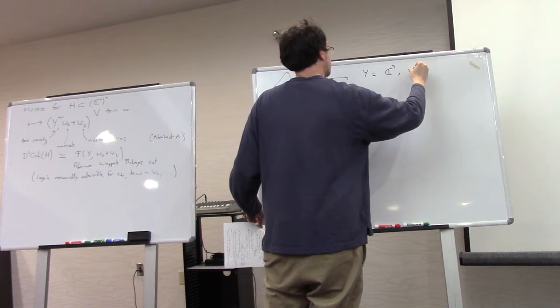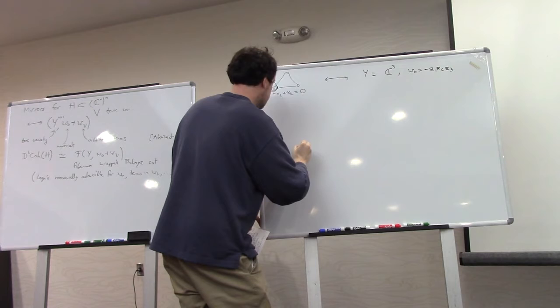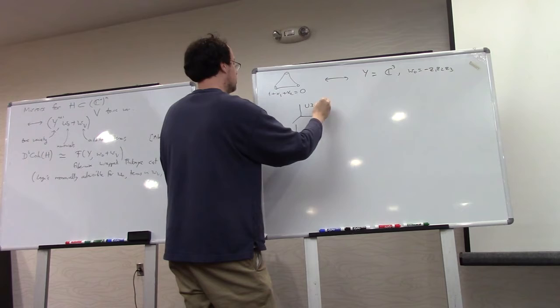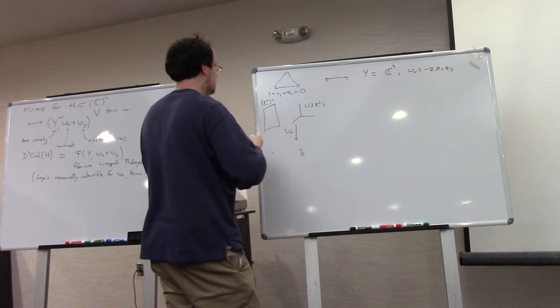viewed as the hypersurface 1 plus x1 plus x2 equals 0 in C star squared. The mirror in that case is C cubed with minus z1, z2, z3. And I explained last time how if we look at the projection under the value of W0,